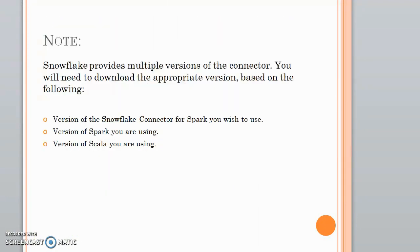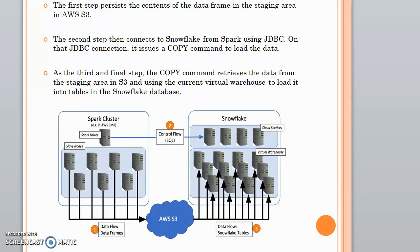Snowflake provides multiple versions of the connector. You have to download the appropriate version based on the Spark connector version you wish to use, the Spark version (2.1, 2.2, or 2.3), and the Scala version (2.10 or 2.11). Internally, the Snowflake Spark connector is not exactly a pure JDBC connection, but it does use JDBC. First, the contents of the DataFrame are moved to a staging area in S3. Then it uses a JDBC connection to connect with Snowflake and issues a COPY command, which retrieves the data from S3 staging and loads it into the Snowflake tables using a virtual warehouse.